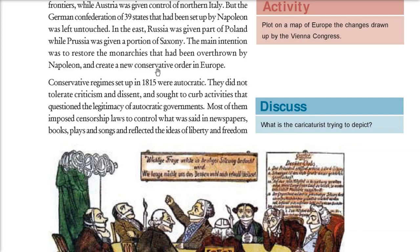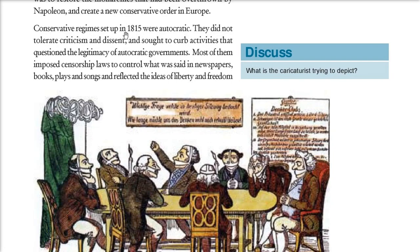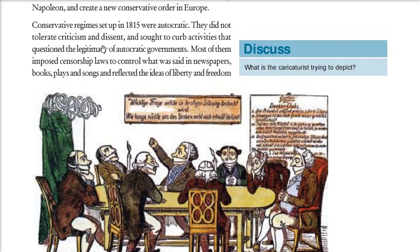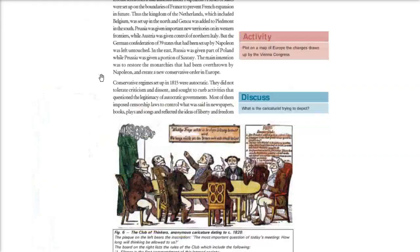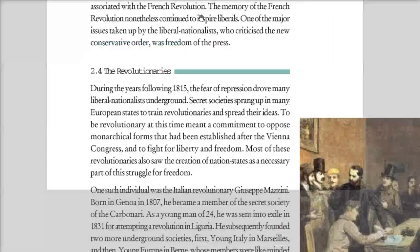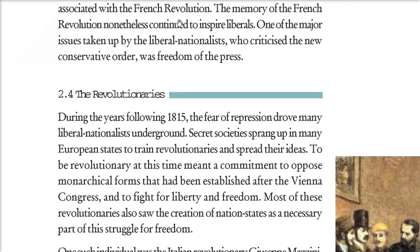The Treaty of Vienna people wanted a new conservative order in Europe. The conservative regime set up in 1815 was autocratic — it could not tolerate any criticism or dissent. Most of them imposed censorship. These governments and rulers imposed censorship on newspapers, books, plays, and songs — because if any contained ideas of liberty and freedom, they needed to be stopped. The memories of the French Revolution were still alive in people's minds.